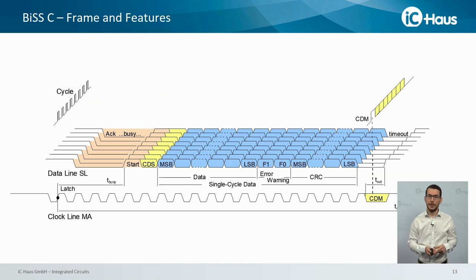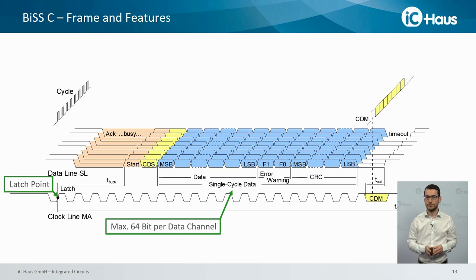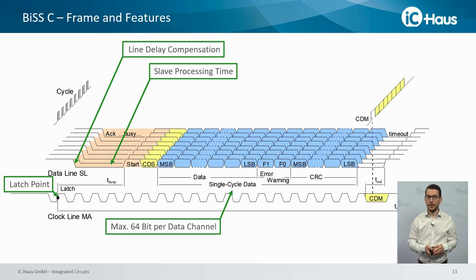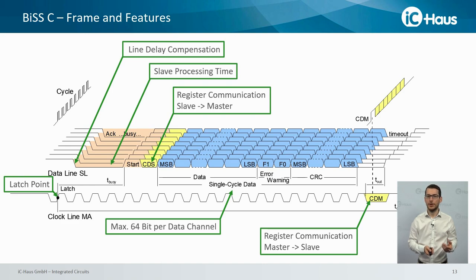Focusing on the BiSS frame and its features: there is a common latch point for all BiSS-C slaves connected to one master. A data channel can consist of up to 64 bits. The BiSS master measures and compensates the line delay, allowing high bit rates even on long transmission lines. The BiSS master is also able to consider the slave's processing time. A continuous bidirectional register communication is possible — the master sends one bit of control data within its clock signal, and the slave responds with one bit in the header.